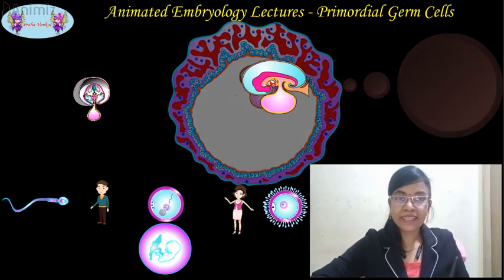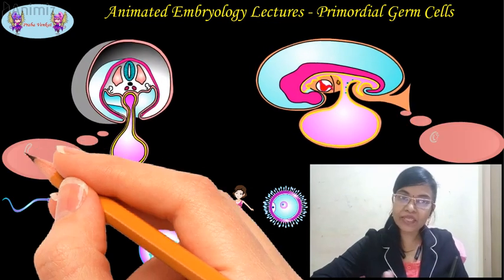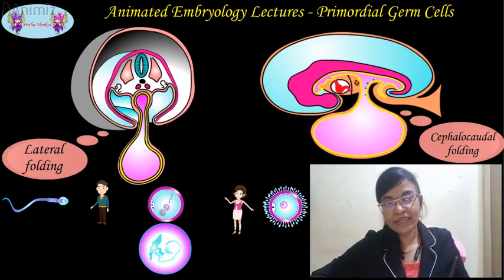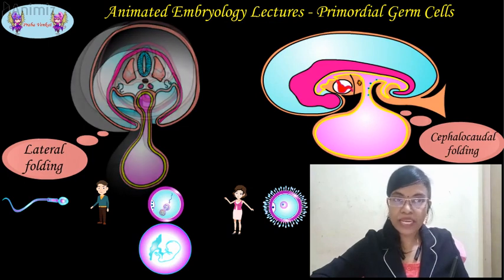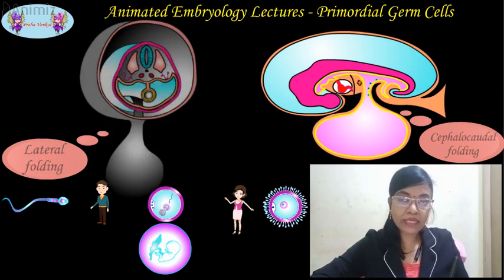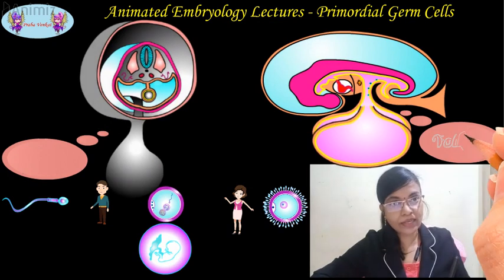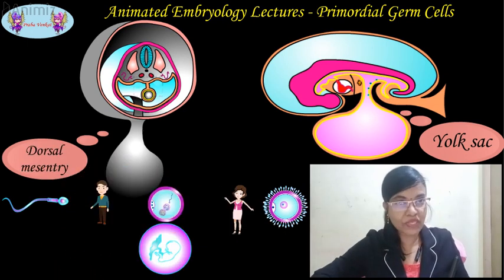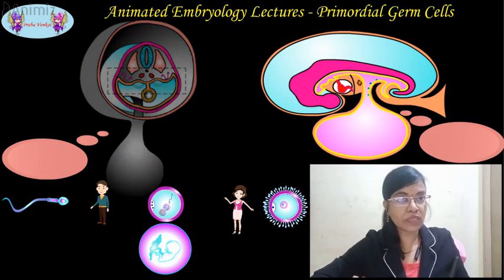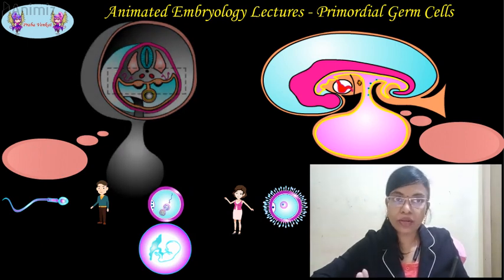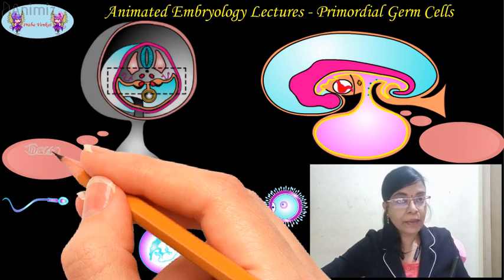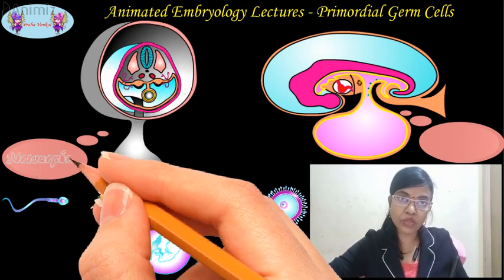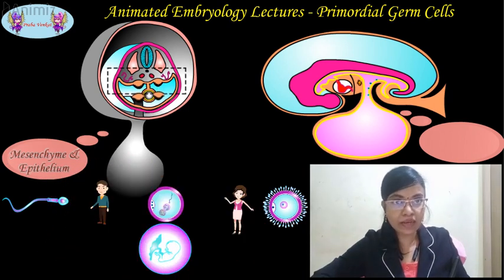By the fourth week, the embryo attains a rounded structure through cephalocaudal and lateral folding. Gut tube formation is underway — the newly formed gut tube is ventrally connected with the yolk sac and dorsally connected with the dorsal body wall through the dorsal mesentery. At the same time, along the posterior wall of the embryo, a pair of longitudinal gonadal ridges develop between the dorsal aorta and the mesonephros, by condensation of mesenchyme and proliferation of epithelium.